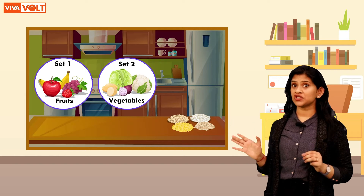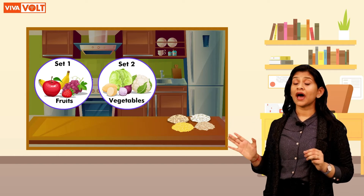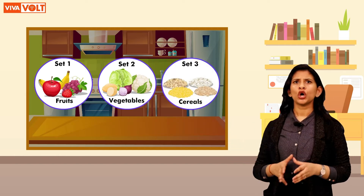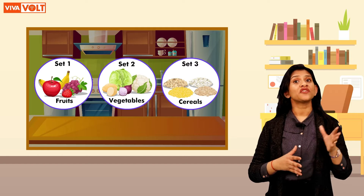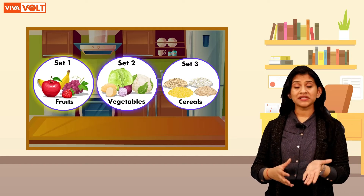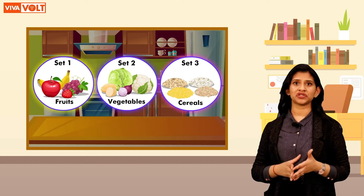Children, we can place all these different things into specific sets: Set 1 of fruits, Set 2 of vegetables, and Set 3 of cereals. We can say that we find fruits, vegetables and cereals in our kitchen.